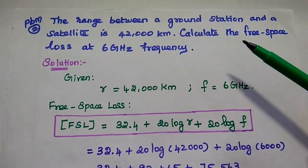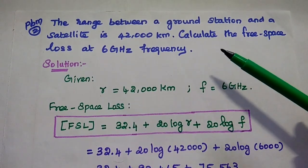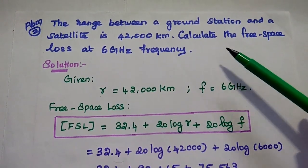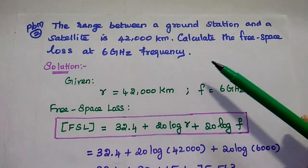The next problem: the range between the ground station and a satellite is 42,000 km. Calculate the free space loss at 6 GHz frequency.